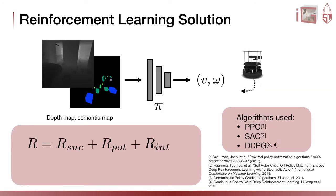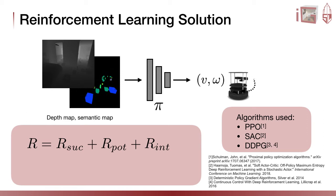To facilitate research in our benchmark for this new type of navigation task, we provide several reinforcement learning solutions. They take as input depth and semantic maps and output linear and angular velocity of the robot. We train the policy network with three state-of-the-art reinforcement learning algorithms: PPO, SAC, and DDPG.